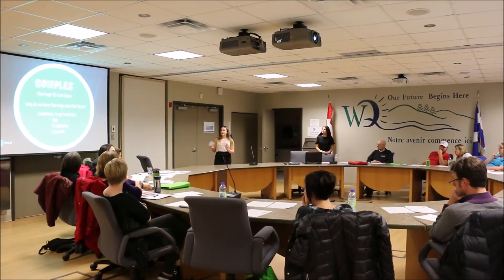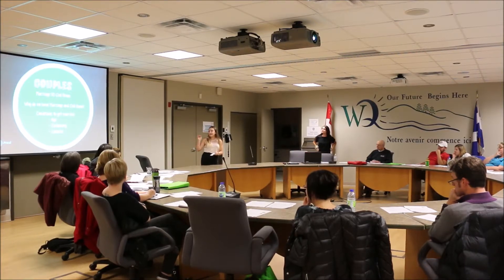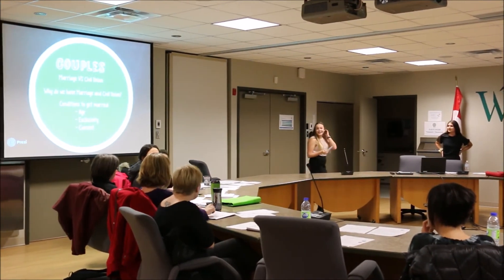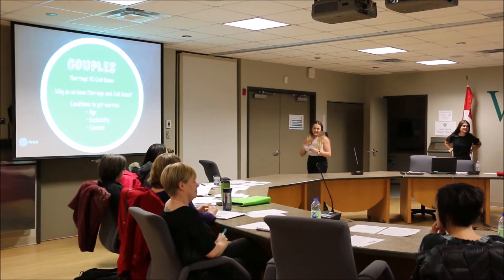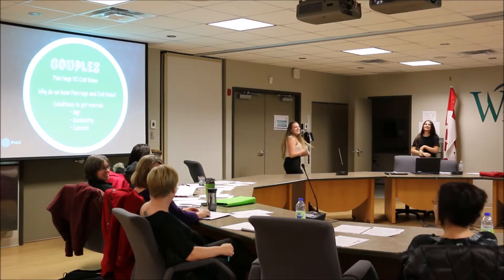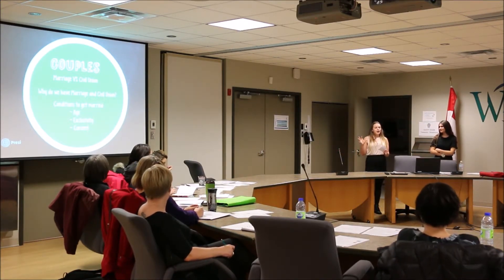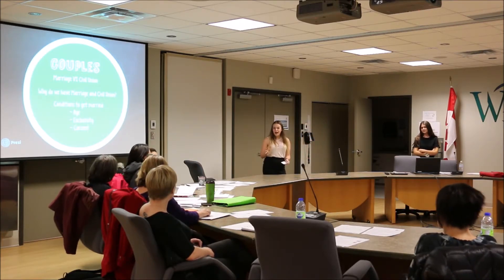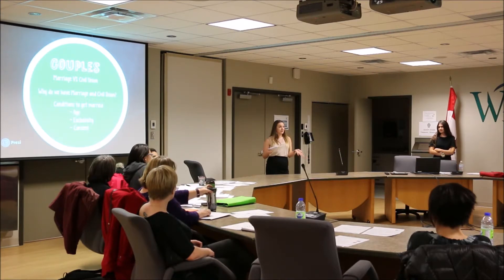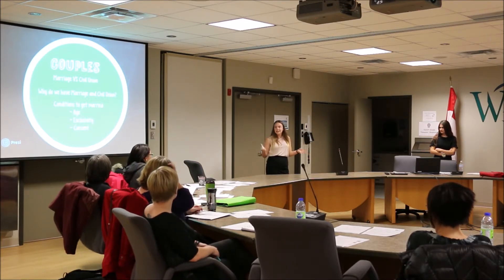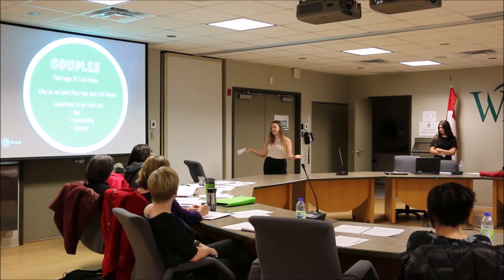Marriage and civil union are essentially the same thing. The only difference is that the civil union requires both parties to be 18 years old, while marriage allows 16-year-olds under federal legislation. We have two regimes because before 2005, same-sex couples couldn't get married, so the civil union was invented. Since 2005, same-sex couples can get married, so the civil union is a bit less popular today.